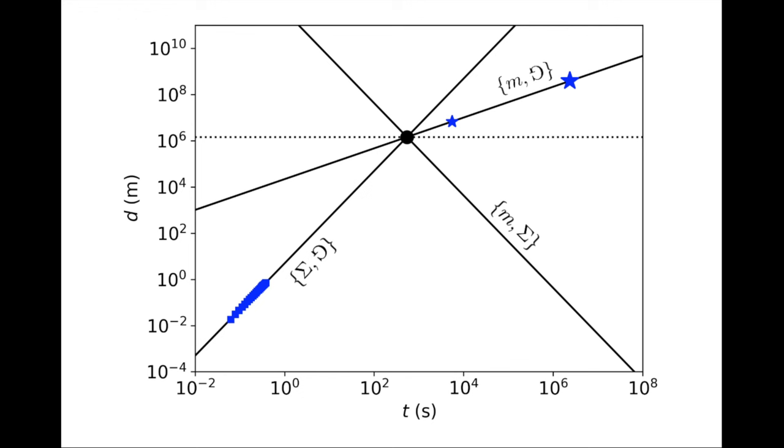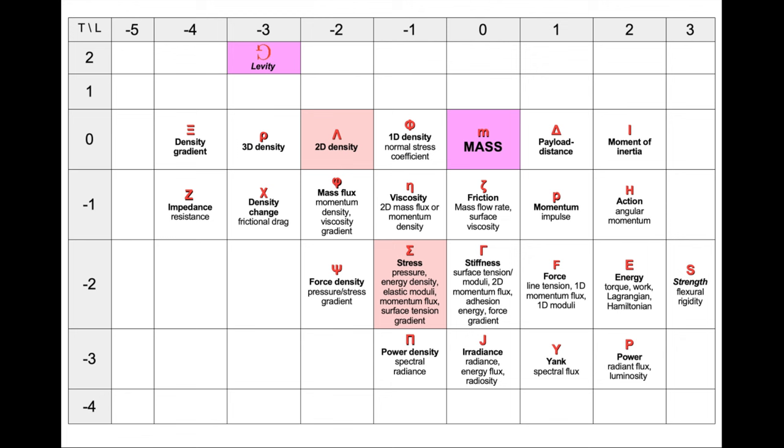With this model, and with the geometric model from before, we consider cases where the freefall depended on levity. So the third quantity was on a line of slope minus two, going through levity. Instead, the freefall may depend on the mass of the earth, in which case the third quantity must be on a line of slope minus two, but now going through the mass.